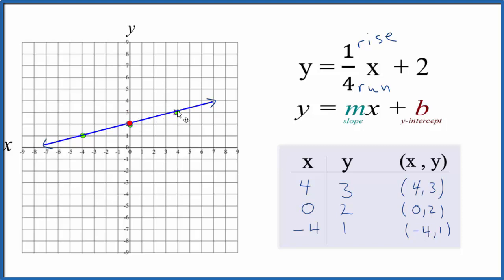Likewise, from this point we could rise 1 and go over 1, 2, 3, 4, and that would also be on our graph if we extended it. So that's just another way to check our work.